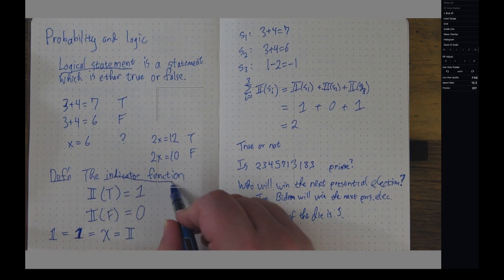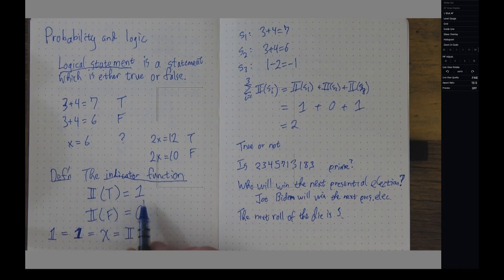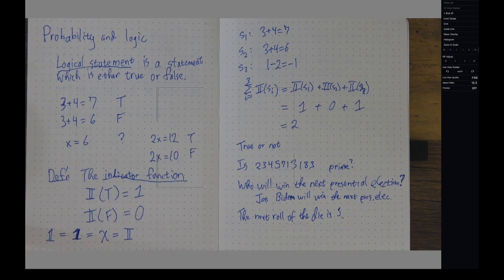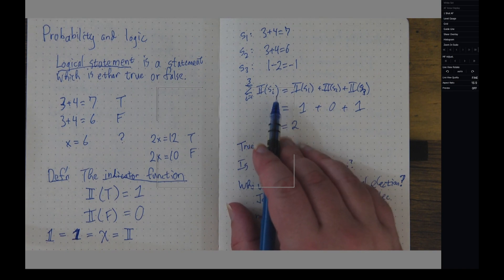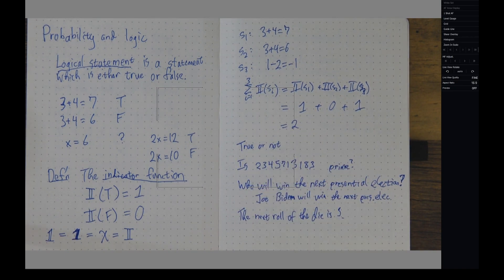Now, the indicator function that we talked about turns true statements into a one, it turns false statements into a zero. If I sum up the indicator function of a bunch of statements, I get the number of statements which are true.